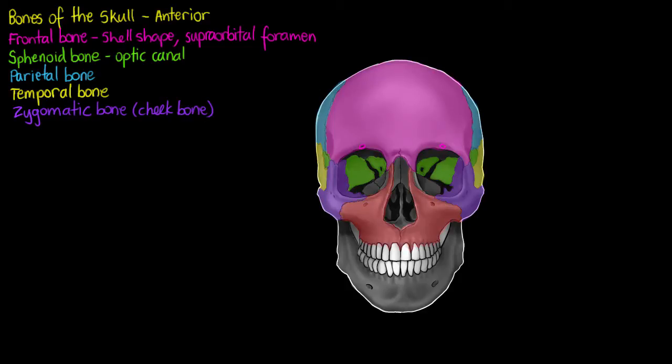So we have our zygomatic or cheek bone, and also here in the red our maxilla. Now I know this naming can be quite boring, but we have to know these names or these basic structures in our skull and the rest of the bones in our body, so bear with me.